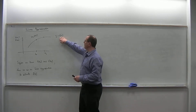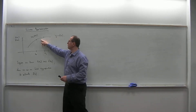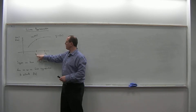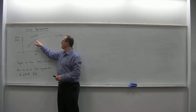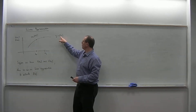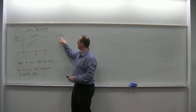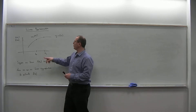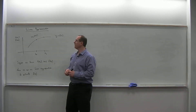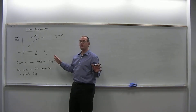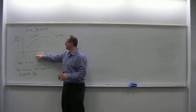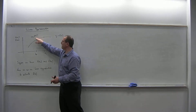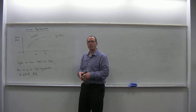Here is the situation. We have a function y equals f of x, which I've drawn here. We have a point on the graph where the x-coordinate is x0, and the corresponding y-coordinate is f of x0. We suppose that x0 is a very nice number for the function so that we can plug it in and get an output very easily, without even using a calculator. So we know f of x0.